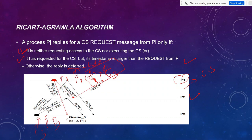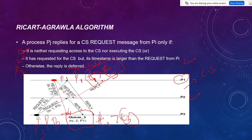The third case: otherwise, the reply is deferred — meaning it is held for some time until the critical section is complete. Here in the P1 and P3 case, we check the condition: if T1 is greater than T3, then P3 sees that its own timestamp is less than T1, so P3 will go to the critical section first. P3 just holds P1's request in its queue, acknowledging that T1's timestamp is there and P1 is the next process to enter the critical section.